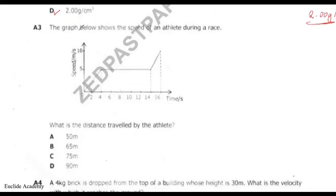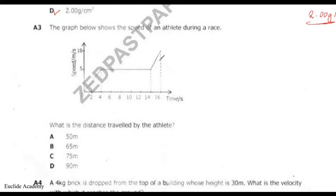Question three: the graph shows the speed of an athlete during a race, with speed in metres per second on the y-axis and time in seconds on the x-axis. What is the distance travelled by the athlete? On a speed-time graph, the distance is the area under the curve. We divide this into three shapes.